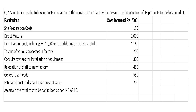We are doing today problem number 7. Sun Limited incurred the following costs in relation to the construction of a new factory and introduction of its product to the local market. The particulars given and the cost incurred in thousands are given in the problem sum: site preparation cost, direct material, direct labor cost including Rs. 10,000 incurred during an industrial strike, testing of various processes in factory, consultancy fee for installation of equipment, relocation of staff to new factory, general overheads, and estimated cost to dismantle at present value.